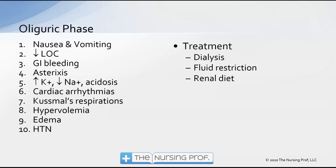As potassium increases and fluid builds up without being filtered, the kidneys try to dump off sodium in an attempt to also dump off potassium and extra water — but the end result is low sodium, which causes decreased level of consciousness. Acidosis also occurs, leading to cardiac dysrhythmias and Kussmaul's respirations — fast, rapid breathing in an attempt to blow off CO2 and correct the metabolic acidosis. Hypervolemia results from fluid retention, causing edema and hypertension. Treatment includes dialysis, fluid restrictions, and a renal diet.